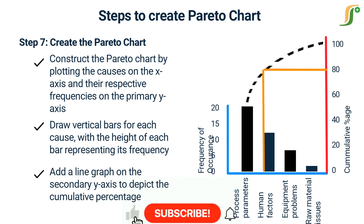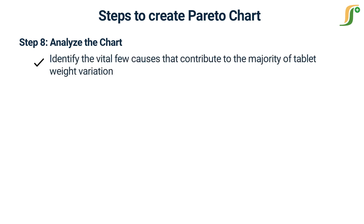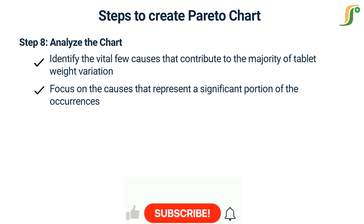Draw a line from the 80% cumulative percentage to the line graph, as shown with the orange line in the chart, and check the causes outside the rectangle created. Step 8 — Analyze the chart: analyze the Pareto chart to identify the vital few causes that contribute to the majority of tablet weight variation. Focus on the causes representing a significant portion of occurrences, as they will have the most impact. In this example, tablet press speed and compression force might emerge as the most critical causes.